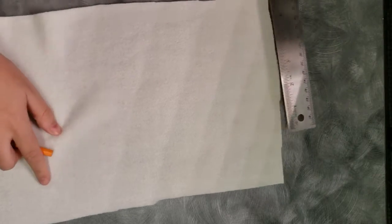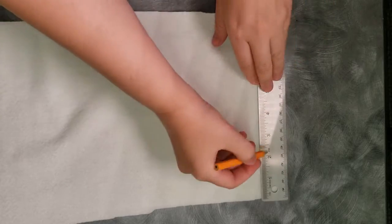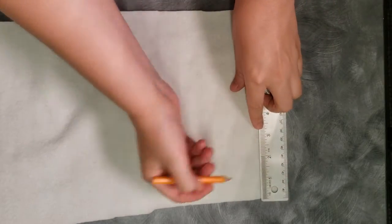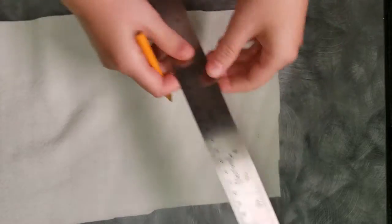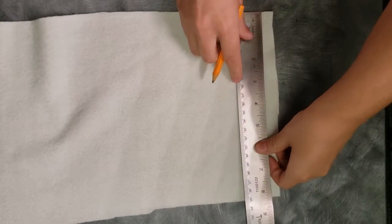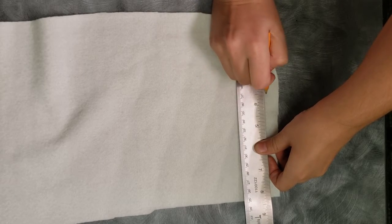You're going to want to take your ruler and your pencil and start making some marks on the edge. You want to mark three inches in from the top and three inches in from the bottom, and then one-half inch in from that.